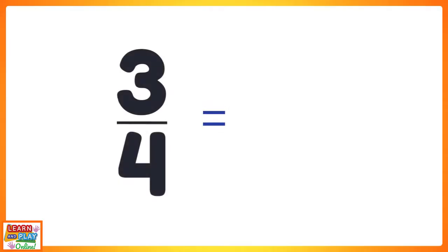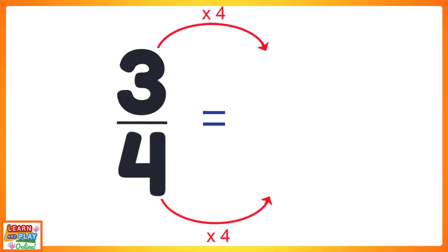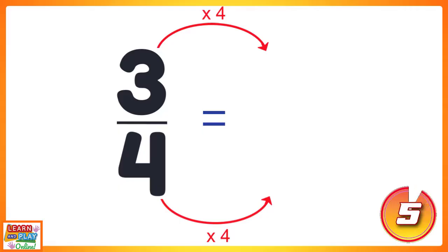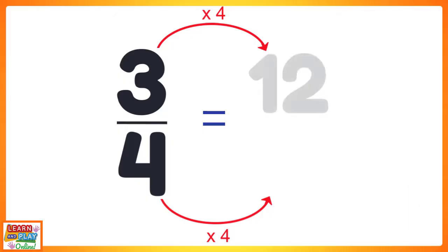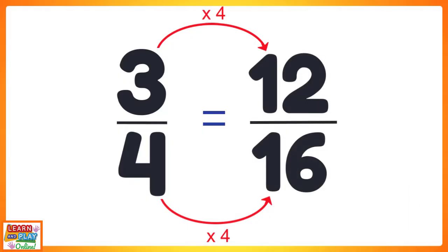Here is one more practice question before we move on to the next part of the video. Find the equivalent fraction for three quarters if you were to multiply this fraction by four. Feel free to pause the video if you need more time. Three times four equals twelve, and four times four equals sixteen. So three quarters is equivalent to twelve over sixteen.